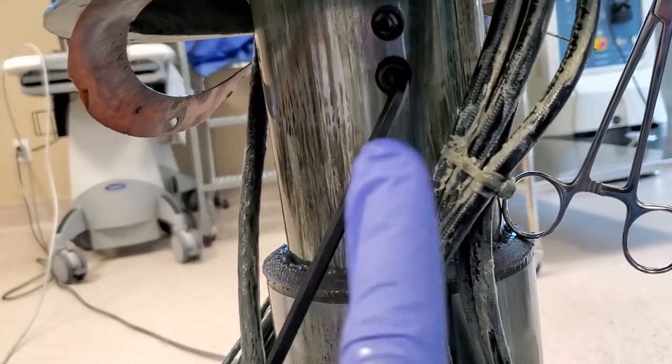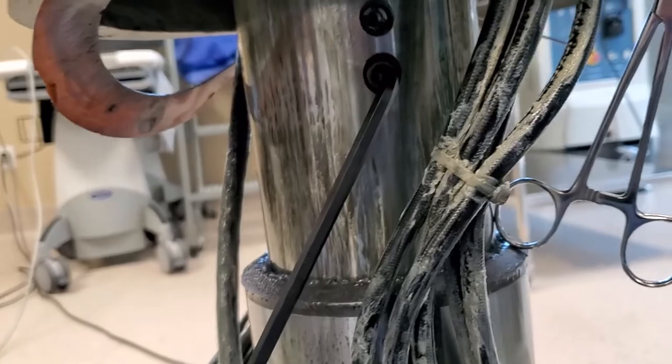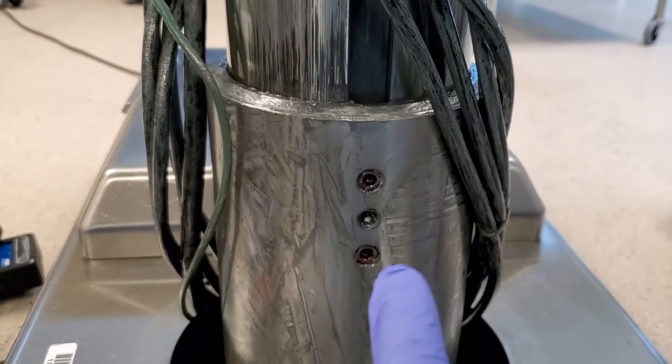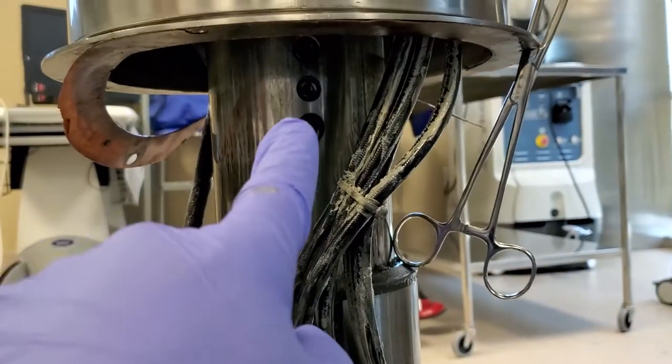Do not pull both fasteners out at the same time. One at a time, clean it, Loctite it, put it in, and pull the other one out. And this one down here is tight, so I don't have to worry about that one. That one up there is a troublemaker.